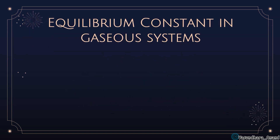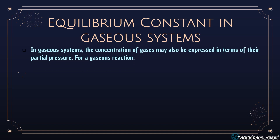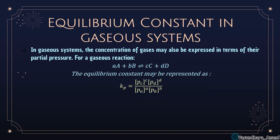For equilibrium in the gaseous state, gases don't have concentration — they have pressure. In a gaseous system the concentration of gases may also be expressed in terms of their partial pressures, and in general it is expressed in terms of partial pressure only. We can convert between concentration and pressure using the ideal gas equation.